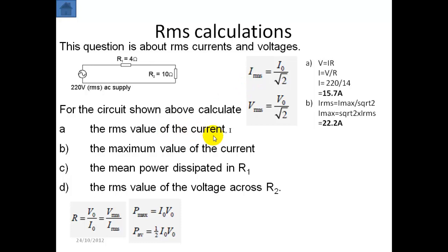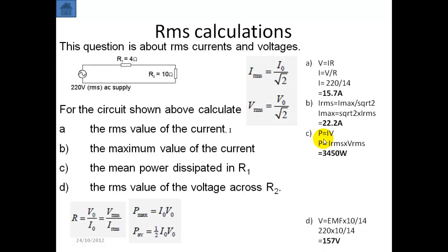The third one is the mean power dissipated in R1. This is wrong — I made a mistake here. I calculated the power dissipated across both resistors, because I took the total potential difference and the total current. So this is the wrong answer. You should use P equals I²R or V²/R. And then for the RMS value across R2, it's going to be I²R or V equals IR, and calculate that way. Or if you know the RMS voltage across both resistors — in other words, across 14 ohms — the share across 10 ohms is going to be 10/14ths of this.